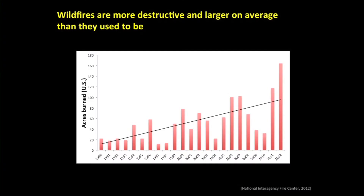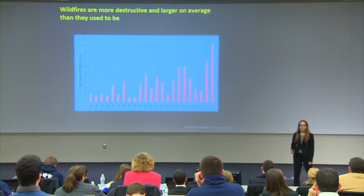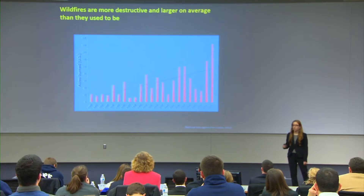Wildfires on average are larger than they used to be. This is a graph that shows the number of acres burned in the United States from 1990 to 2012, made using statistics published by the National Interagency Fire Center. As you can see, wildfires on average have grown larger — the average wildfire in 2012 burned five times as many acres as the average wildfire in 1990. In addition, a Harvard study predicted that an average wildfire in 2050 would burn twice as many acres as one currently does.